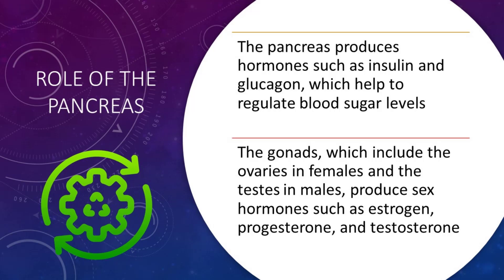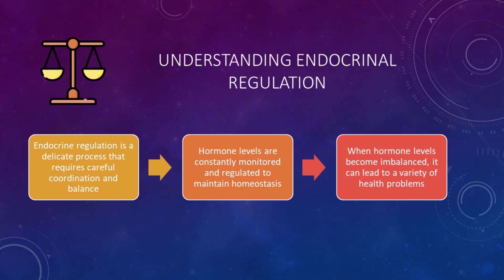Role of the pancreas. The pancreas produces hormones such as insulin and glucagon, which help to regulate blood sugar levels. The gonads, which include the ovaries in females and the testes in males, produce sex hormones such as estrogen, progesterone, and testosterone.